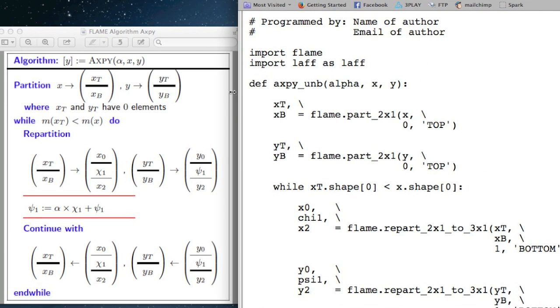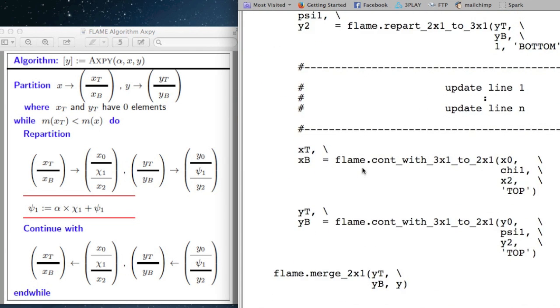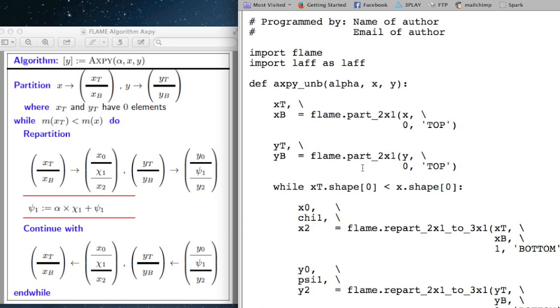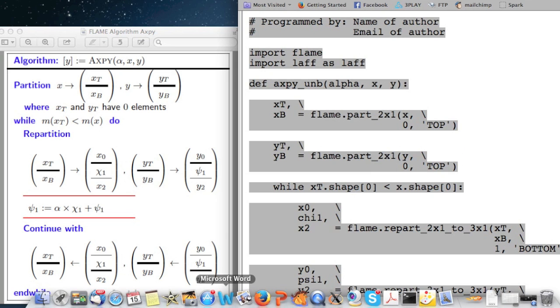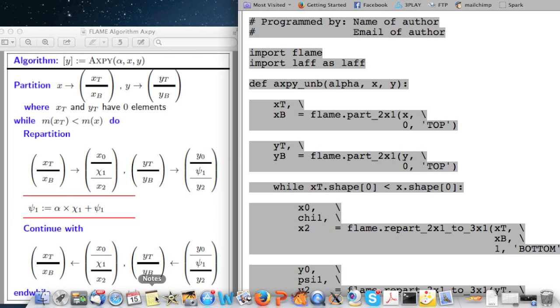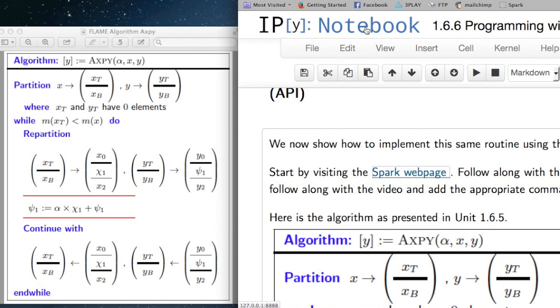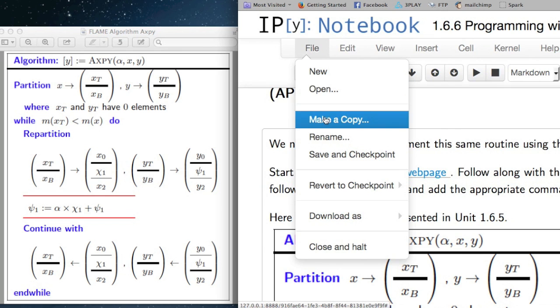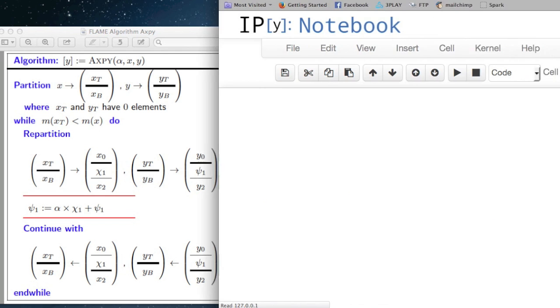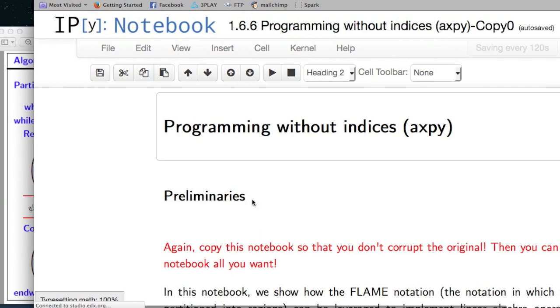On the right here it created the algorithm. I'll highlight this, copy it, and now we're ready to go back to the Python notebook. The one thing I forgot to do is to create a copy before I start making changes. So let's do that quickly.